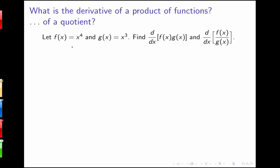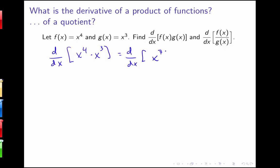We're given here a function f of x equals x to the fourth, and another function g of x equals x cubed. We want to think about how we would go about finding the derivative of f times g and the derivative of f over g. We're doing it with these simple functions because we can take their derivatives using a little bit of simplification and the rules we already have. If I take the derivative of x to the fourth times x cubed, I can simplify that first as the derivative of x to the seventh, which gives us 7x to the sixth.